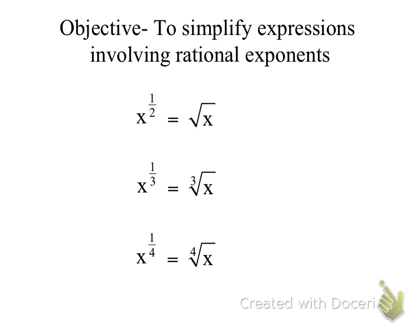Another thing I want to show you is, when I have x to the two-thirds power, this stands for the root and this is the exponent. Since this is the exponent, this would be to the first power. Does that make sense?